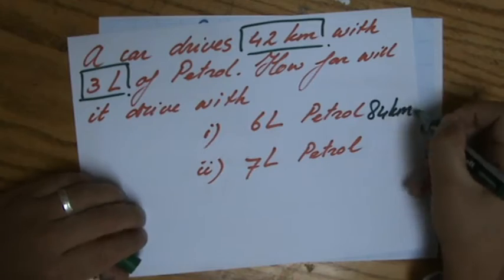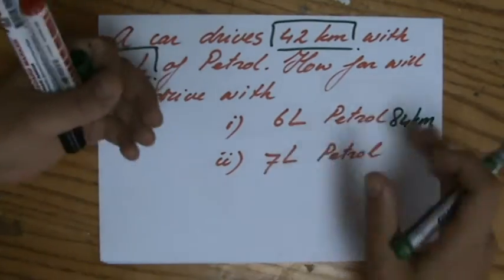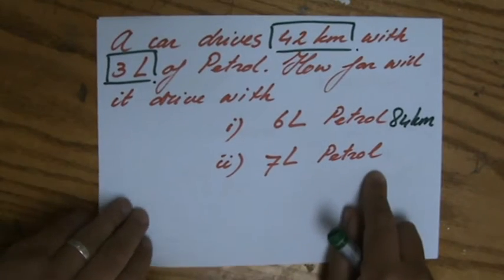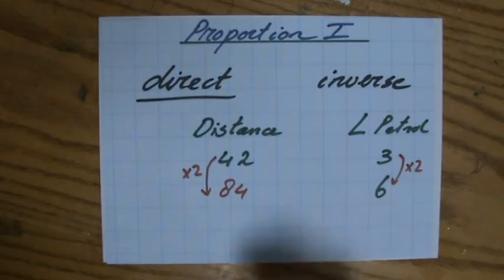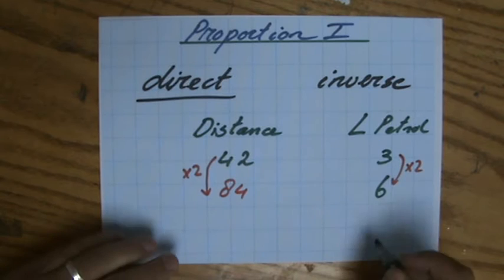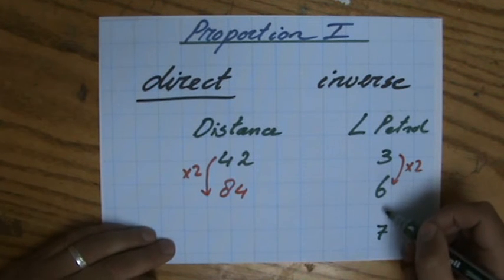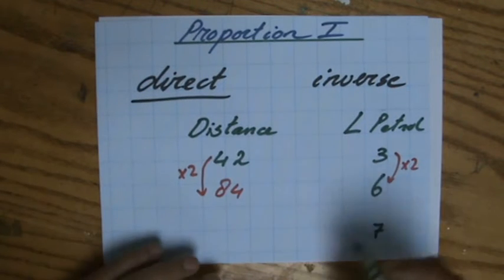Now, that is a relatively easy question, and most of you solve that without creating a diagram. But what about 7 liters of petrol? Because it's not that straightforward. We have to go to 7 liters. I'll put the 7 here, but I leave some space there on purpose. Because what do I do first?